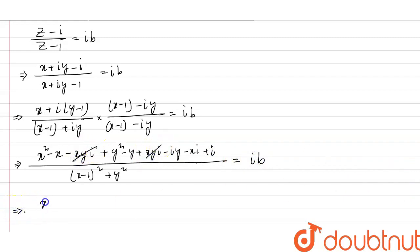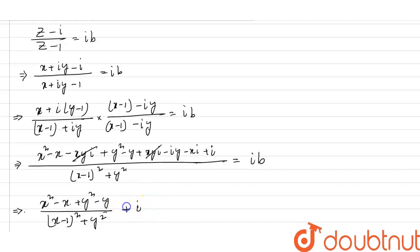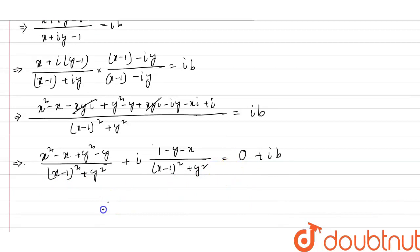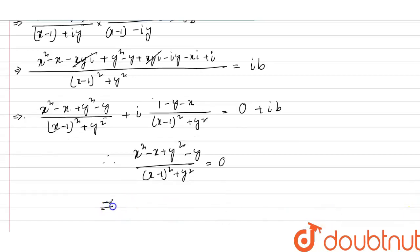So now we have the real part: x squared minus x plus y squared minus y over the denominator, which is x minus 1 whole square plus y squared. This is equal to 0 plus ib. So the real part equals 0. Therefore: x squared minus x plus y squared minus y divided by (x minus 1) whole square plus y squared equals 0. By cross multiplication: x squared minus x plus y squared minus y equals 0.